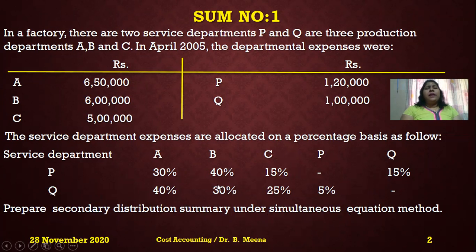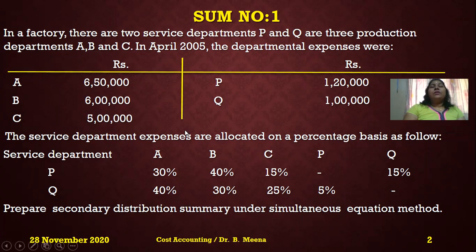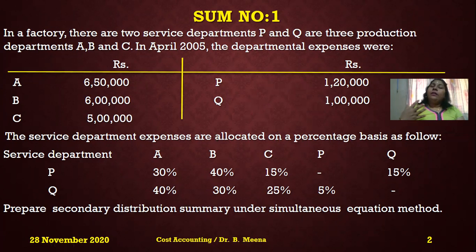The question is to prepare the secondary distribution summary under the simultaneous equation method. Whenever preparing under this method, we first assume the service departments as x and y to frame the equations, get the values of x and y, and then substitute those values in preparing the secondary distribution summary.